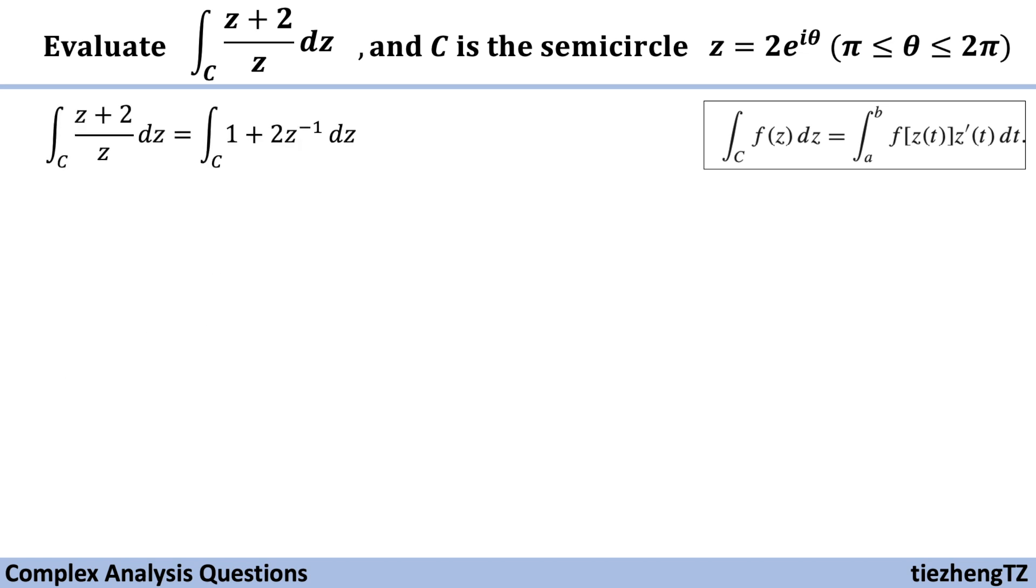So first, our equation we can change from z plus 2 over z to 1 plus 2 times z to the power of minus 1. And in our case, f of z theta is 1 plus 2 times 2 times e to the power of i theta, this whole thing to the power of minus 1. And z theta prime equals 2 times e to the power of i theta times i. It's the first derivative.